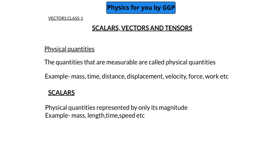Scalar quantities are quantities which are represented only by their magnitude. For example, if you represent the mass of an object as 10 kilograms, that information alone is sufficient — mass has no direction. Similarly, length, time, and speed are examples of scalar quantities. A scalar can be represented using only its magnitude, with no need for direction.